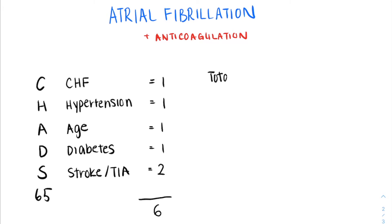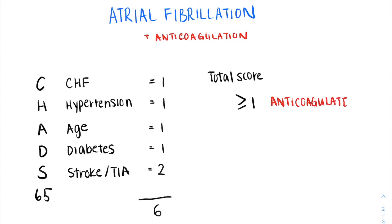The decision to anticoagulate always requires considering the risks of bleeding versus the benefits of anticoagulation. The higher the total CHADS score, the higher the risk of annual stroke, and the greater the benefit to anticoagulation. Generally, a score greater or equal to one is an indication for anticoagulation, and for that we can use warfarin, oral anticoagulants, or injectable heparin.